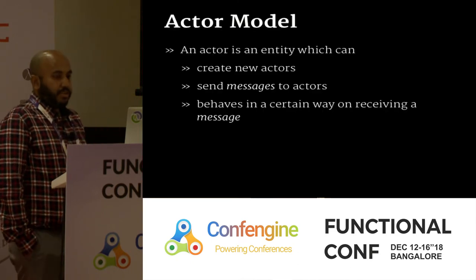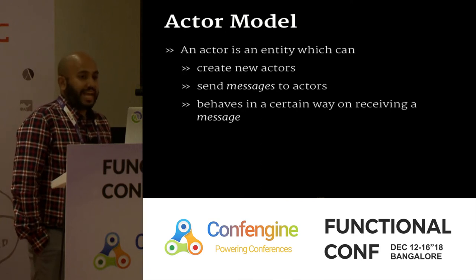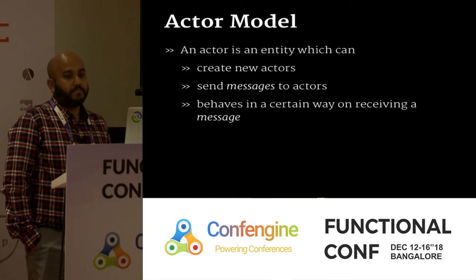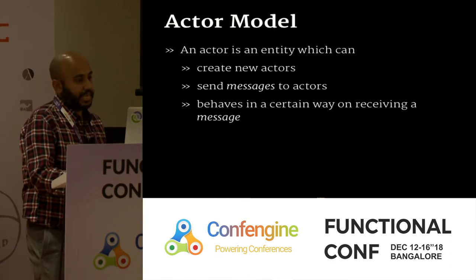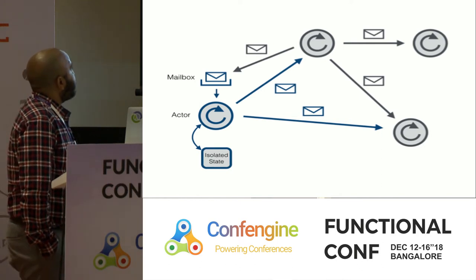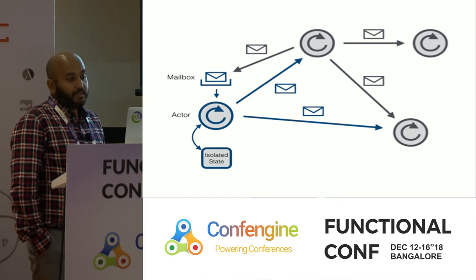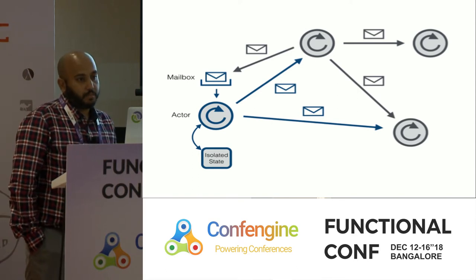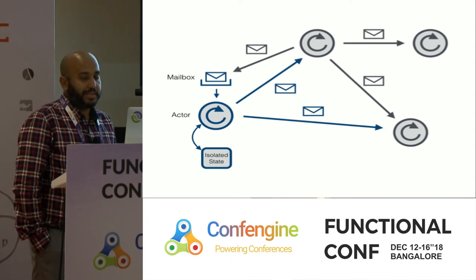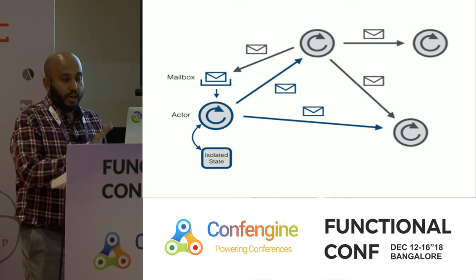What is an actor? An actor is actually pretty simple: it is a thing that can create new actors, can send messages to other actors or to itself, and can receive messages and do something. That's all an actor is. In Erlang, the circles are actors and the envelopes are messages — actors send messages to each other. There is something called a mailbox. An actor is nothing but a green thread; Erlang calls them processes, but they're just green threads implemented by the Erlang VM.